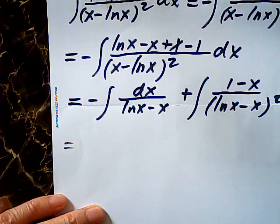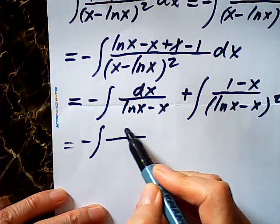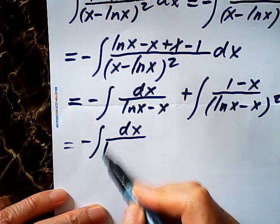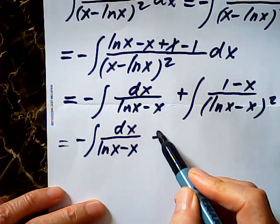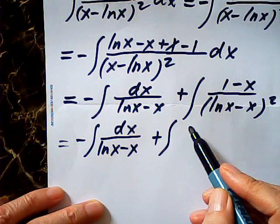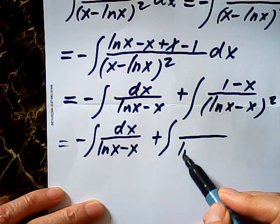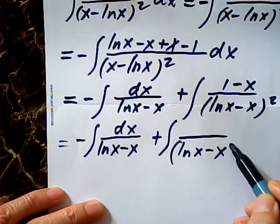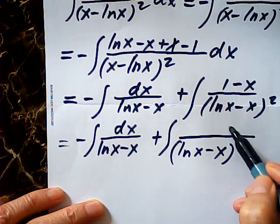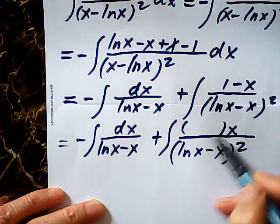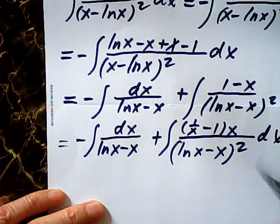Now, this one I keep as is: log x minus x. This one I write. This is log x minus x square. I take x out. It becomes 1 over x minus 1, isn't it?